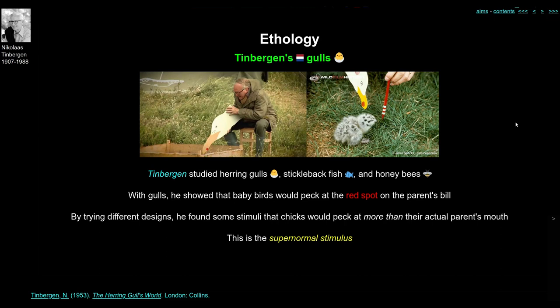Here is Nico Tinbergen with a massive cardboard cutout of a seagull, and in a box he's got some baby seagull chicks. What Tinbergen is doing is showing the baby gulls a picture of an adult seagull. The red spot on the bird's beak is really important — it serves as a cue, a stimulus, to make the bird peck at the parent's mouth and try to get some food. He tried recreating this with cardboard: what if he made the red spot bigger? What if he made the whole bird bigger? He found that the chicks would continue to peck at even quite abstract representations of the bird.